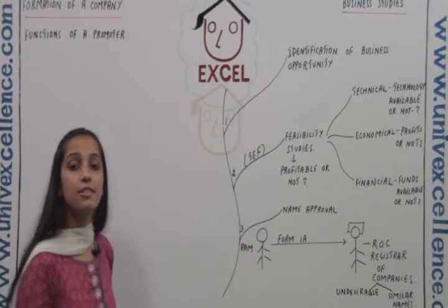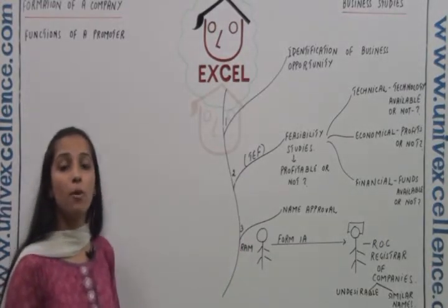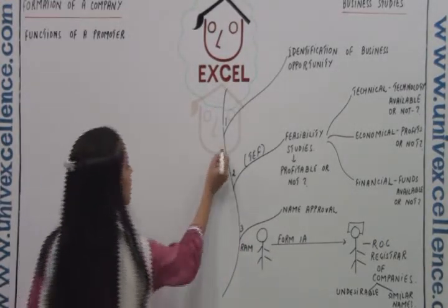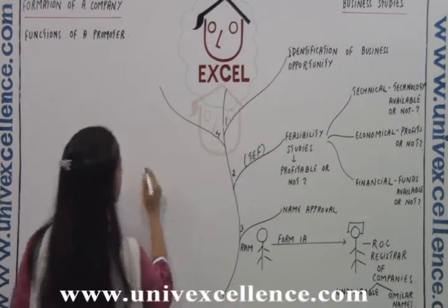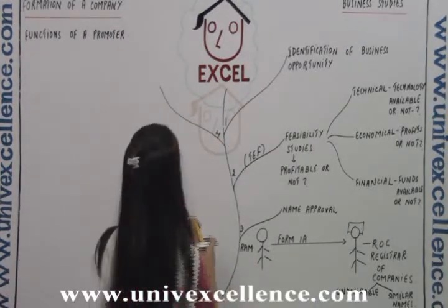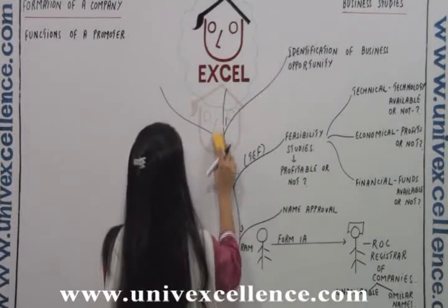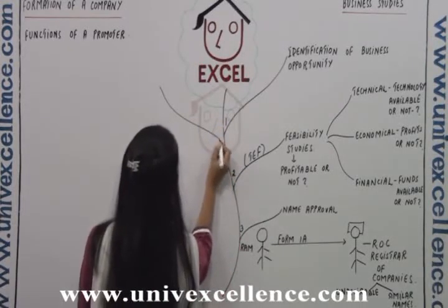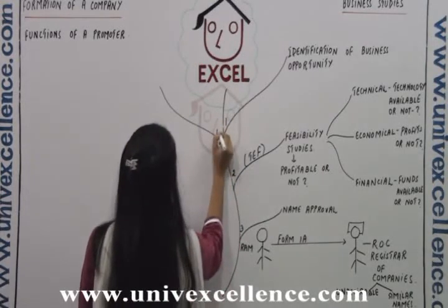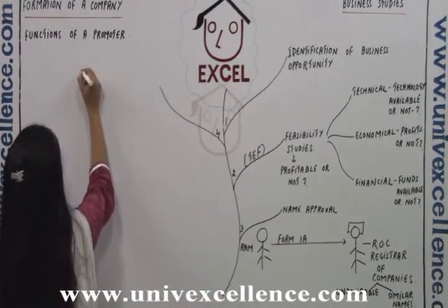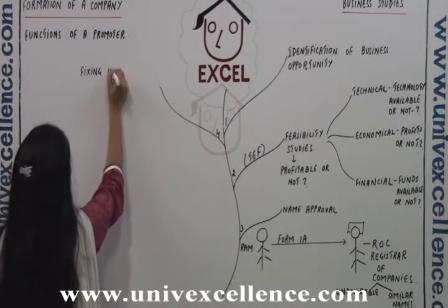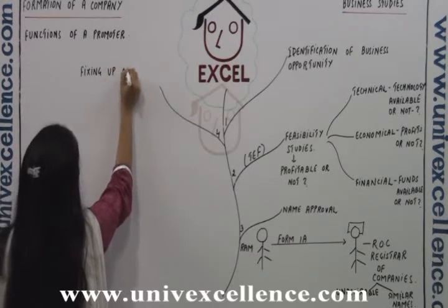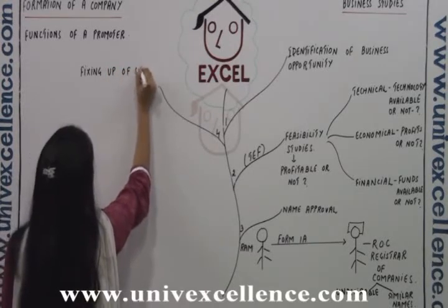The next point is fixing up of signatories. This is the fourth function of the promoter.